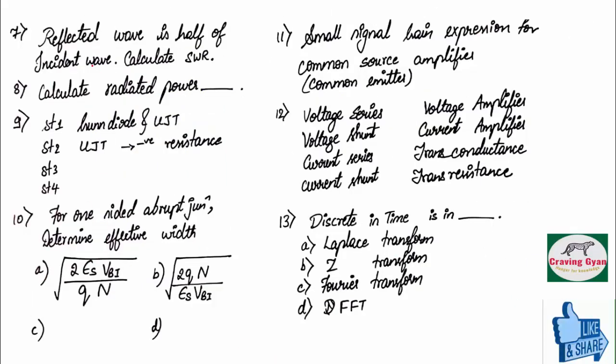Seventh question. They have given reflected wave is half of incident wave. Reflection coefficient gamma equals to 0.5. You have to calculate standing wave ratio.